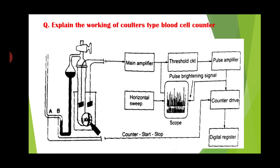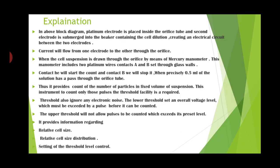The next method used in the blood cell counter is the counter type method. The setup for the counter method blood cell counter uses a mercury manometer. A platinum electrode is placed inside the orifice tube and a second electrode is submerged into the beaker containing the cell dilution, creating an electrical circuit between the two electrodes.